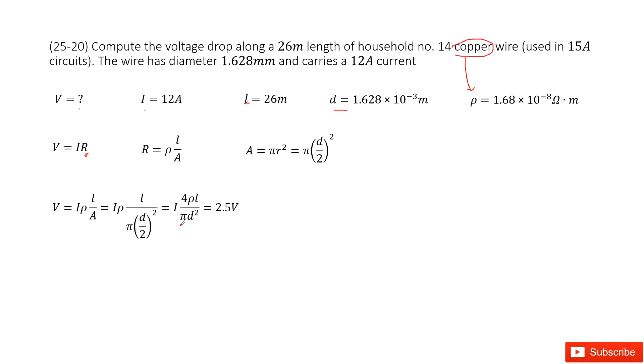And then replace the A with pi R squared. And then, simplified, you can get a function for V. Input all the given quantities and you get the answer. Thank you.